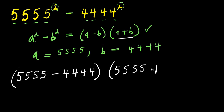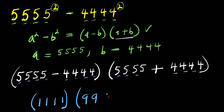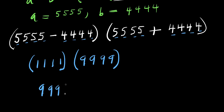Times (a plus b), which will be 5555 plus 4444. Now let's do the subtraction and the addition. Five minus four we have one — for each digit — so we get 1111. Then five plus four we have nine for each digit, giving us 9999.